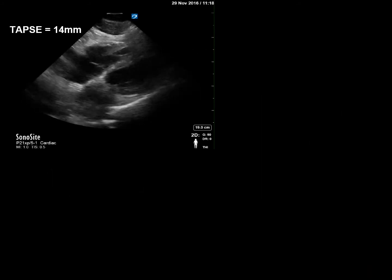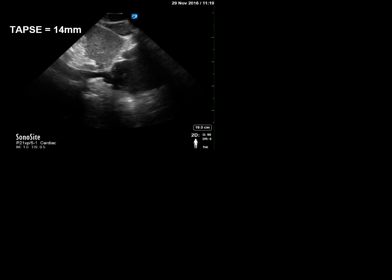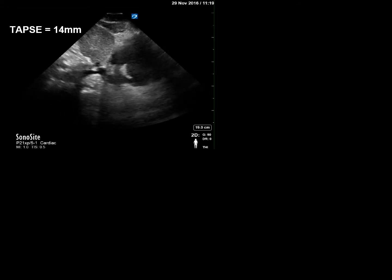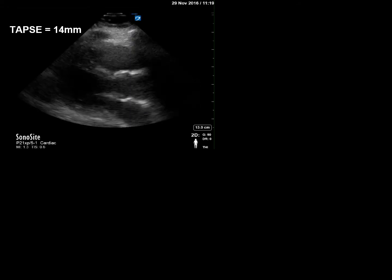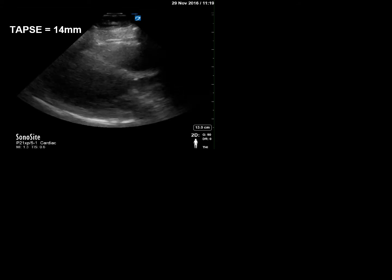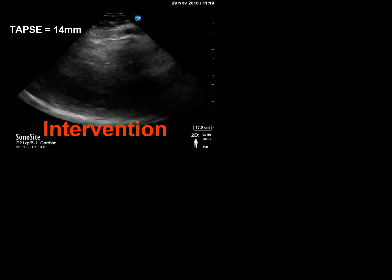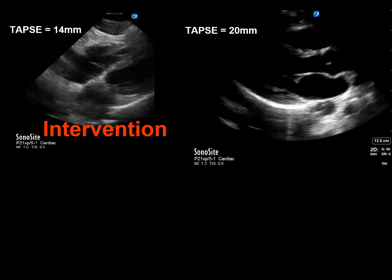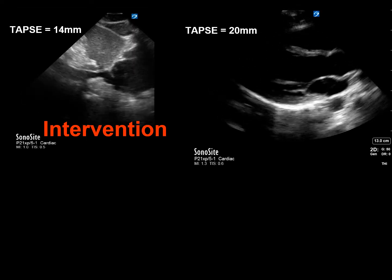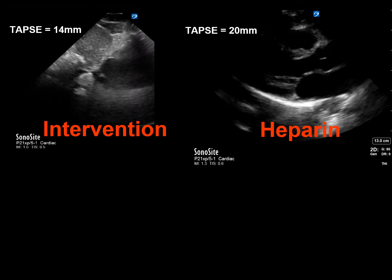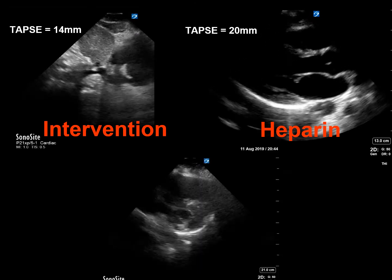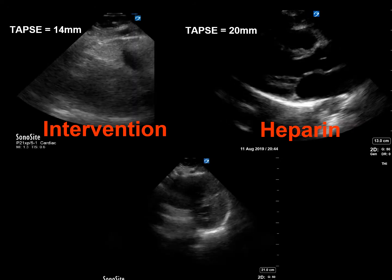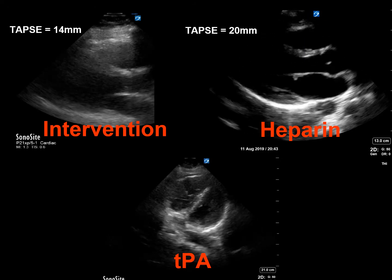Patient one has evidence of RV strain on bedside echo and an abnormally low TAPSE of 14. They are at high risk for deterioration despite their normal blood pressure and would benefit from early interventions such as catheter-directed thrombolysis. Patient two has no RV strain and a normal TAPSE — they should do just fine with heparin and observation. Patient three has massive RV strain and a large right atrial clot. Their hemodynamic instability along with this ominous bedside echo indicates that TPA may be their only viable treatment.